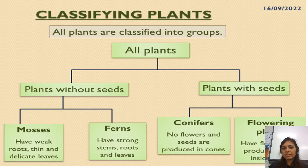You've got conifers — they do not have any flowers and they just produce cones. And finally you've got the flowering plants, which are the normal plants you see around that have flowers on them.